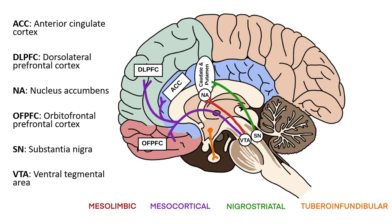For now, the four principal dopamine pathways are as follows. The mesolimbic pathway, branching from the ventral tegmental area to the nucleus accumbens. The mesocortical pathway, branching from the ventral tegmental area to the orbitofrontal and dorsolateral prefrontal cortex, as well as the anterior cingulate cortex. The nigrostriatal pathway, branching from the substantia nigra to the dorsal striatum, which is made up of the caudate and putamen.